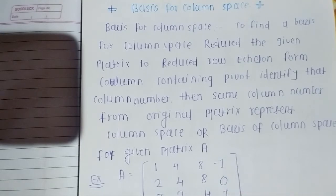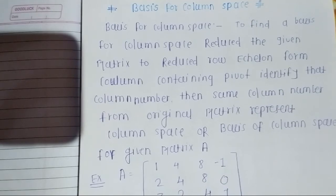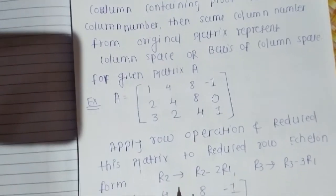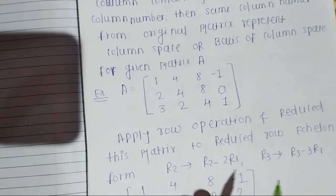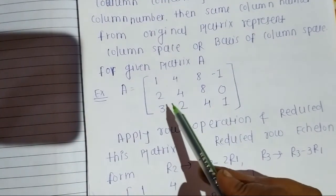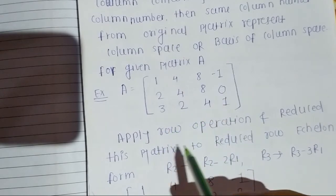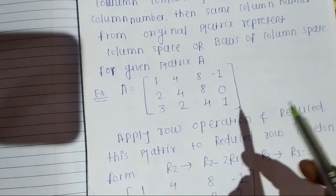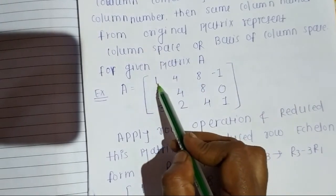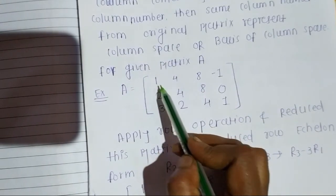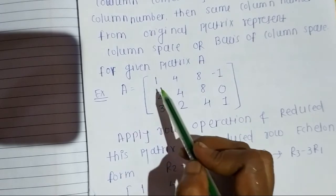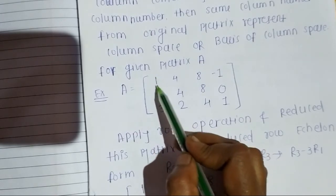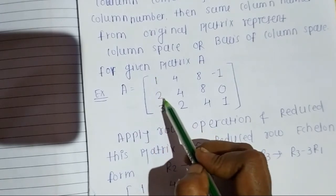Now let's look at an example directly. The given matrix is of order 3 rows and 4 columns. We apply row operations to reduce this matrix to RREF. For the first diagonal, we already have a 1, so we need to make the elements below it zero.